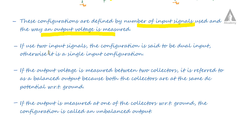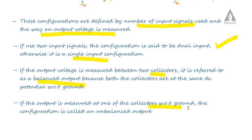If we use two input signals, the configuration is said to be dual input; otherwise it is called a single input configuration. If the output voltage is measured between two collectors, it is referred to as balanced output. If the output is measured at one of the collectors with respect to ground, the configuration is called unbalanced output.